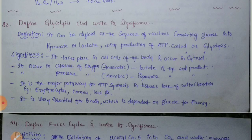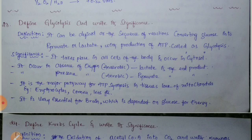It is essential in erythrocytes, cornea, and lens cells of the eye. It is very essential for the brain, which is dependent upon glucose for energy, so the brain can completely depend upon glycolysis for the production of energy.